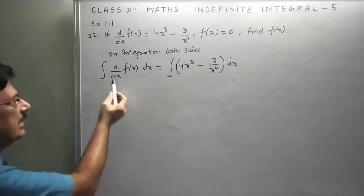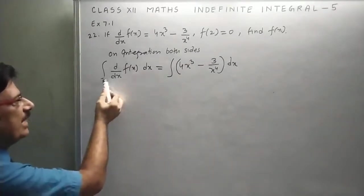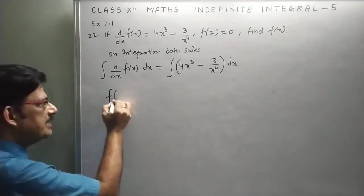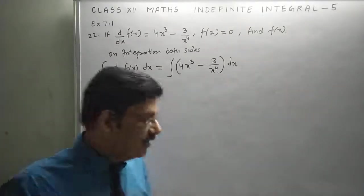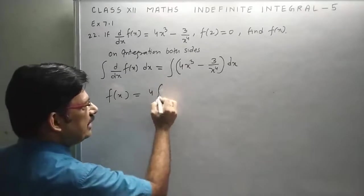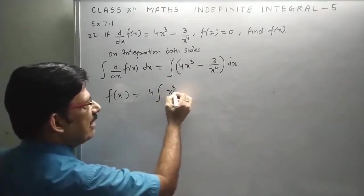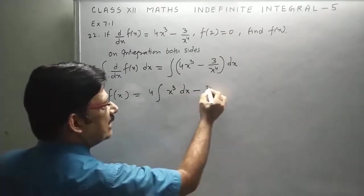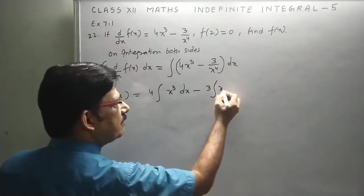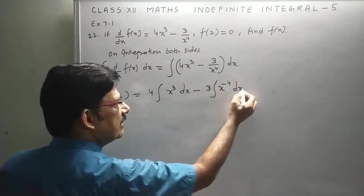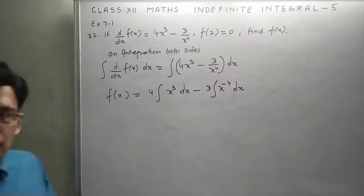Now, it is differentiation of this and again integration, both will cancel out. We get only f(x). Now, in right side, 4 is constant. We have x³ dx minus 3 is constant. 1 upon x⁴ means you can write x to the power minus 4 dx because we have to use power formula.